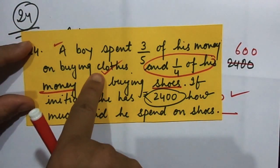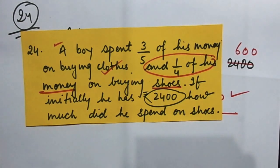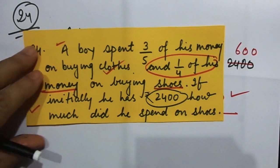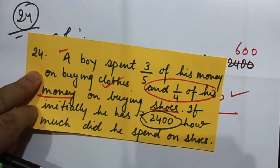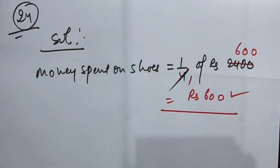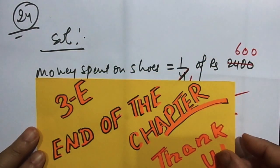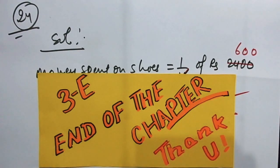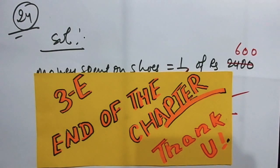Rupees 600 is your solution. Many children don't even read through the question and declare themselves unable to solve it. Please read the question properly — I bet these are very very easy. Now when I remove this page, one more sheet will come where it says 'end of the chapter.' Thank you, and bye!